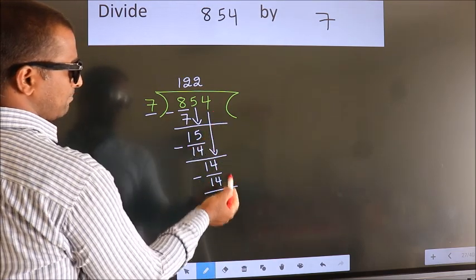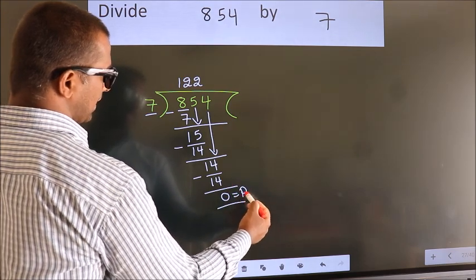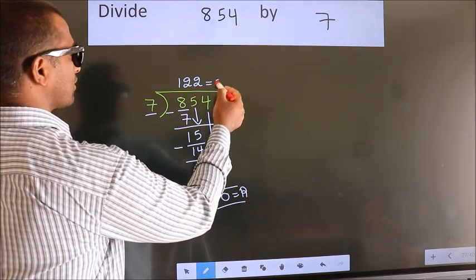No more numbers to bring down. So we stop here. This is our remainder. This is our quotient.